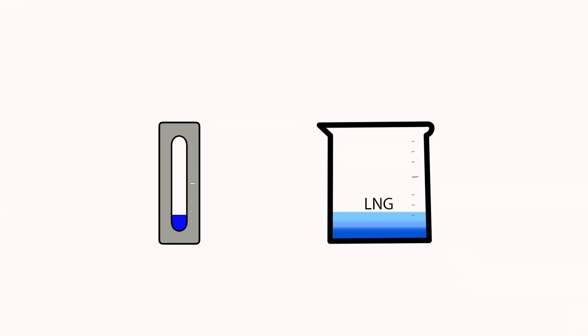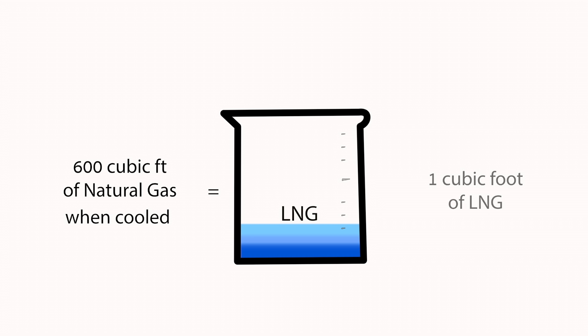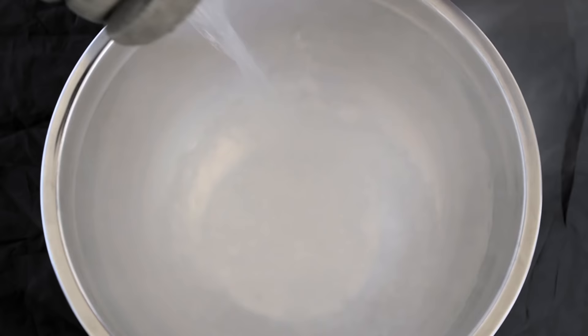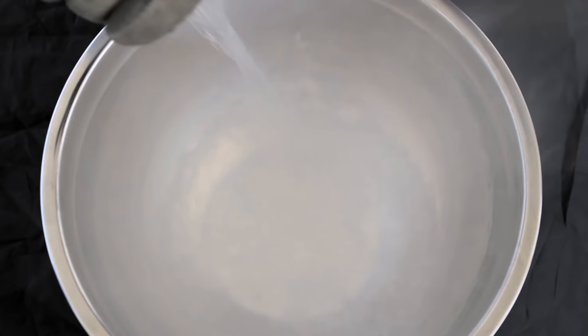The advantage of being in a liquid state is that it takes up less space. In fact, 620 cubic feet of regular natural gas when cooled to a liquid results in no more than one cubic foot of LNG. Cold LNG vapor is also heavier than air, but as it warms it becomes lighter than air and rises.